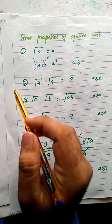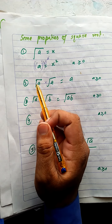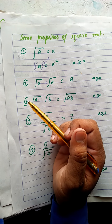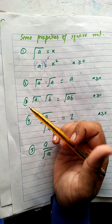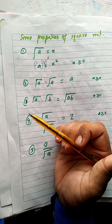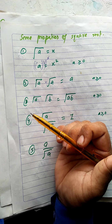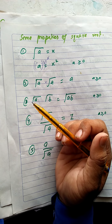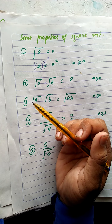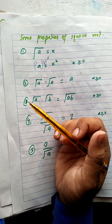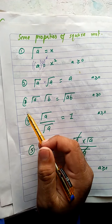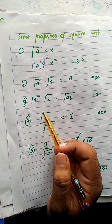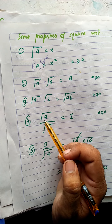Property number three: when the bases are different, under root a multiplied by under root b is equal to under root of a times b. If both bases are different, the square root sign applies to both together.